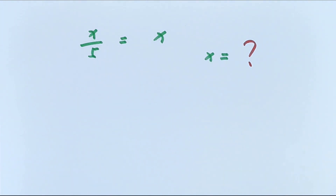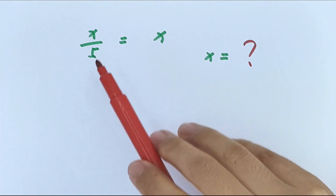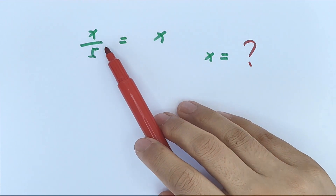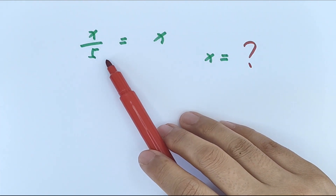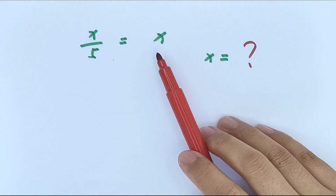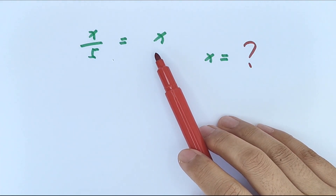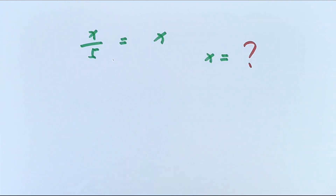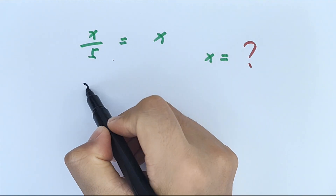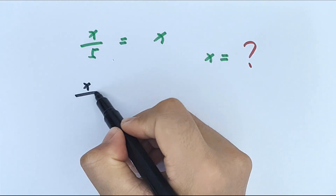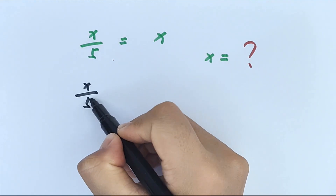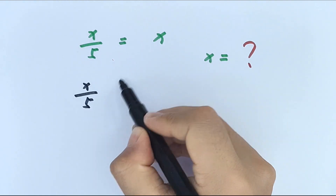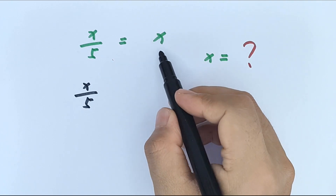Hello everyone, welcome to Math4U. How to solve x over 5 equals x, to find the value of x. x over 5 equals x.